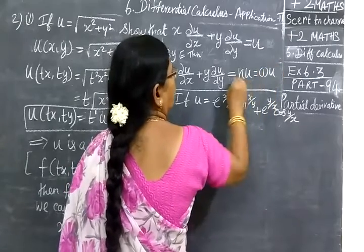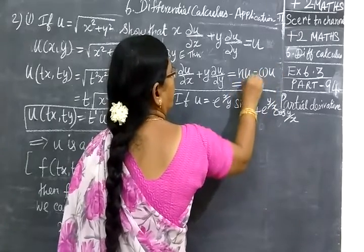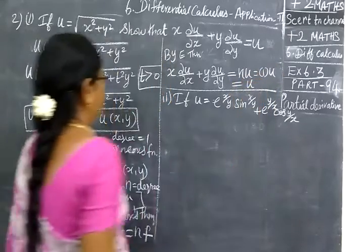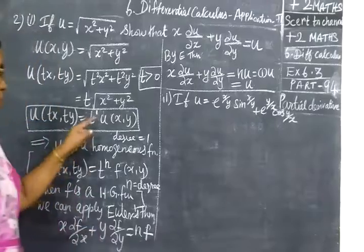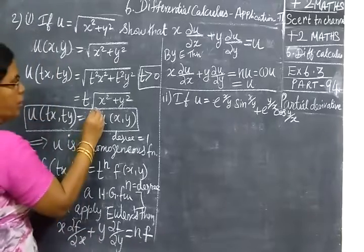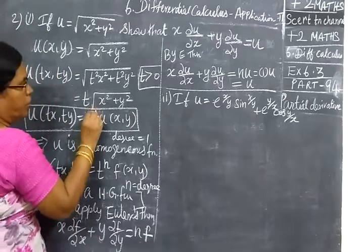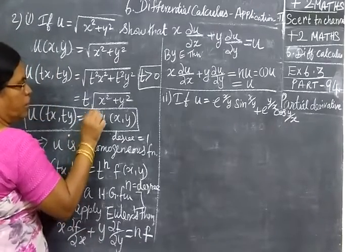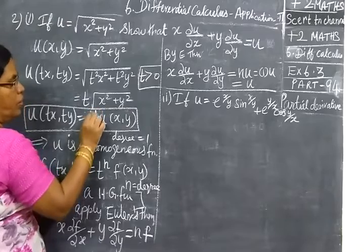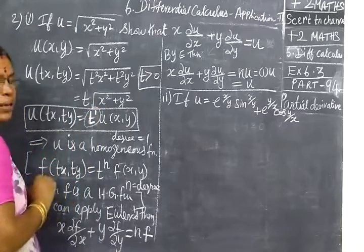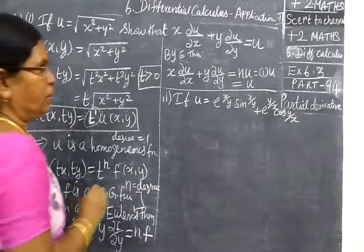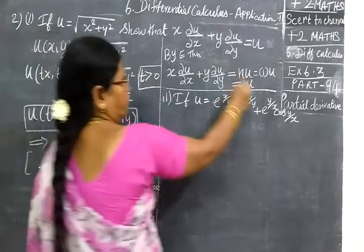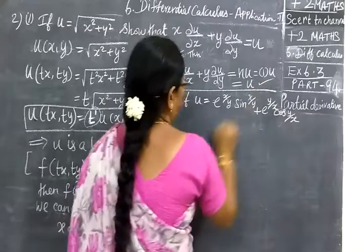Since 1 into u equals u, and 1 is the degree, the answer is u. So the first question is complete.